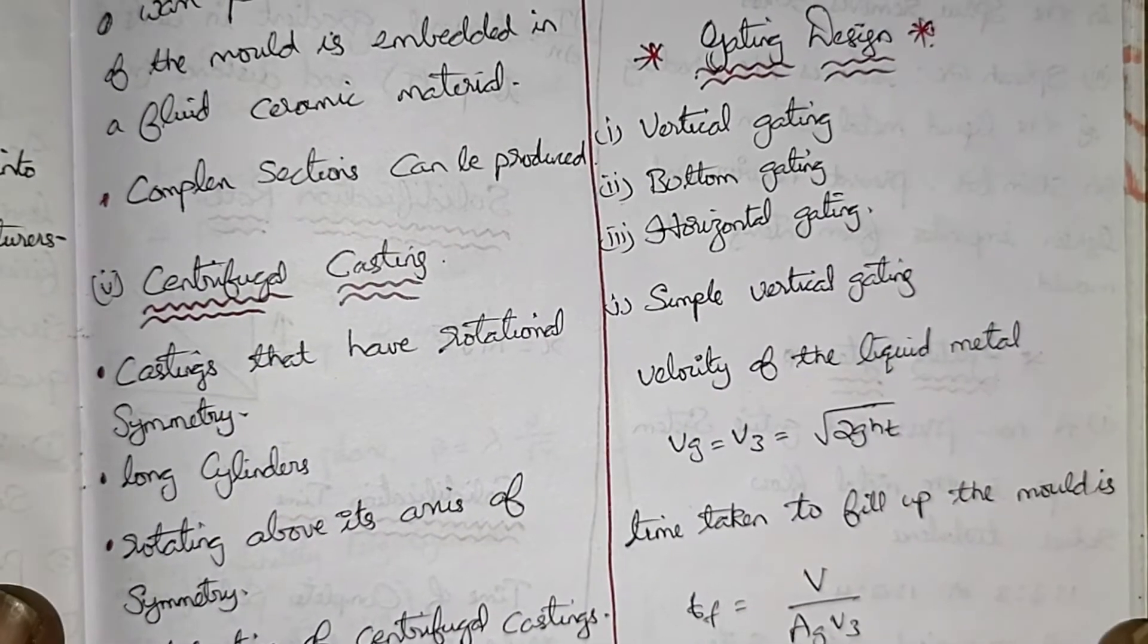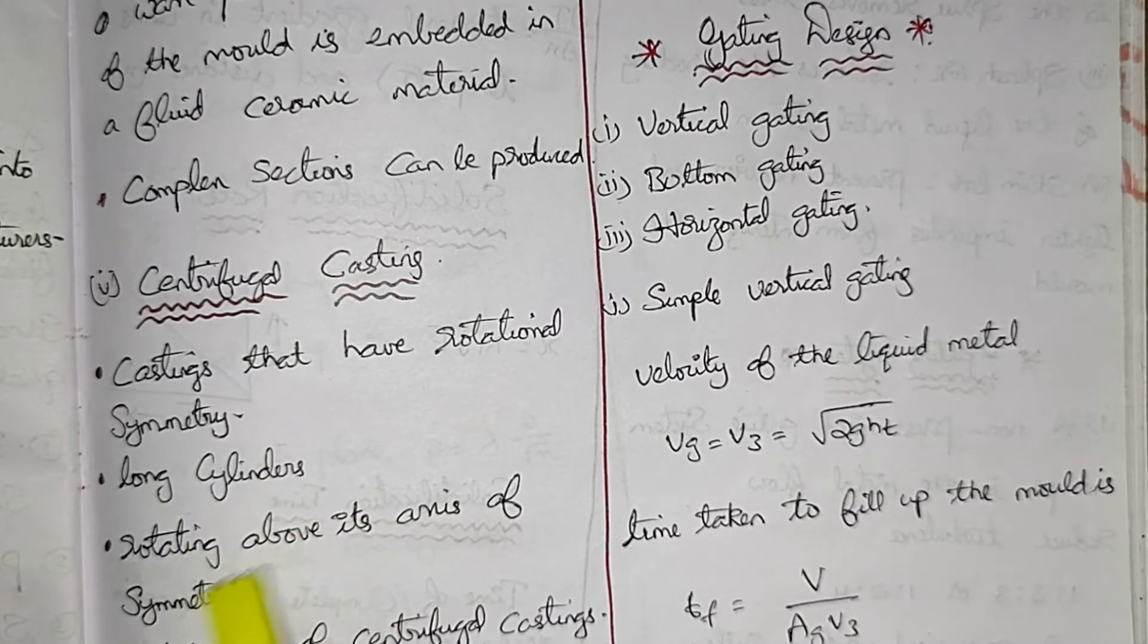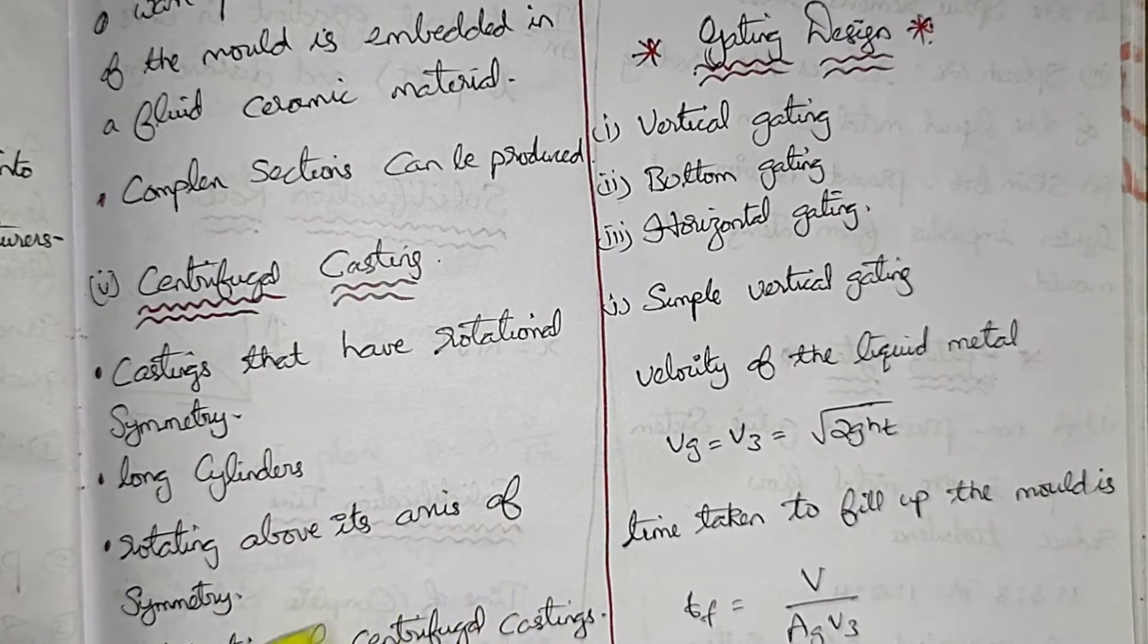Now centrifugal castings - castings that have rotational symmetry, long cylinders, rotating above its axis of symmetry.